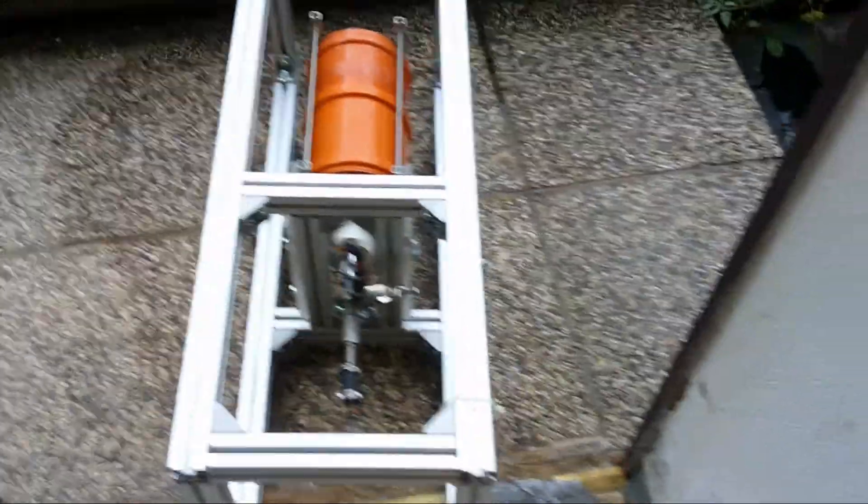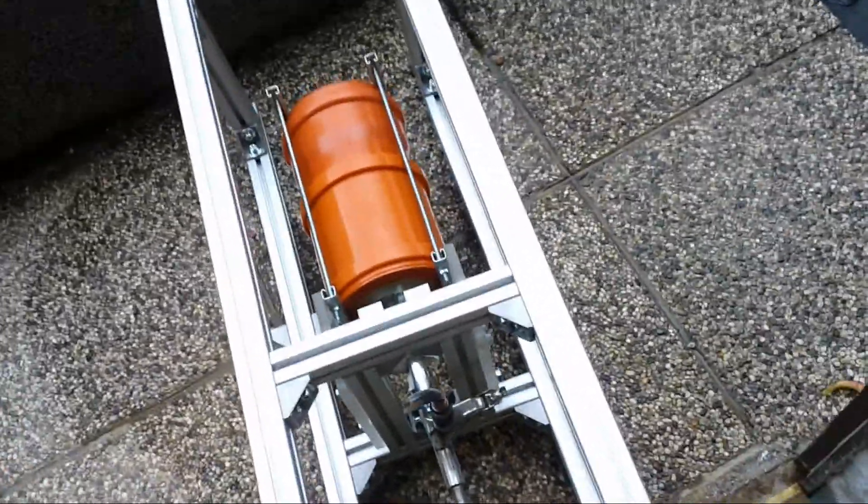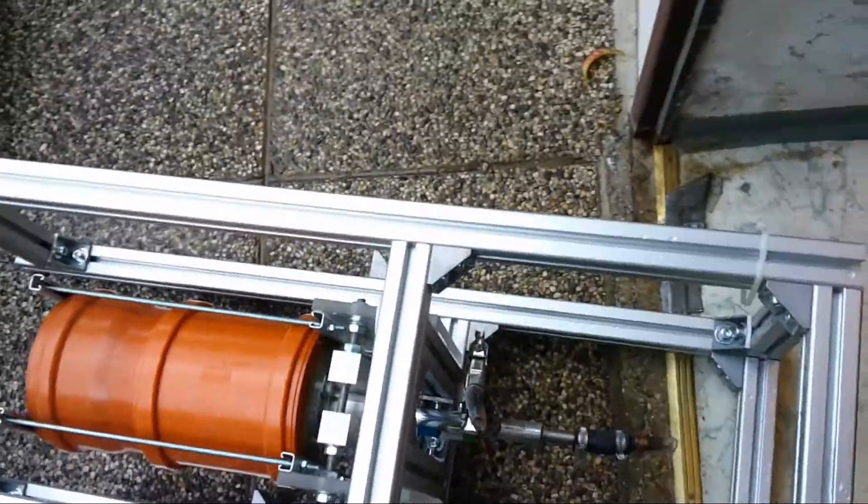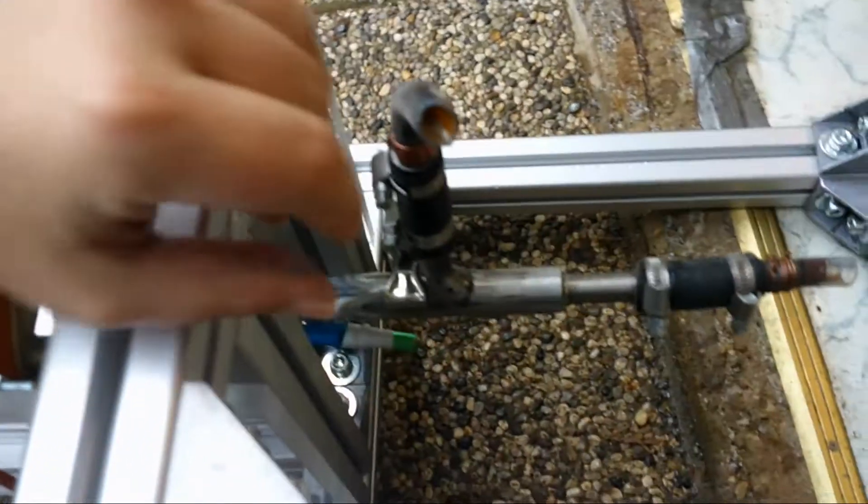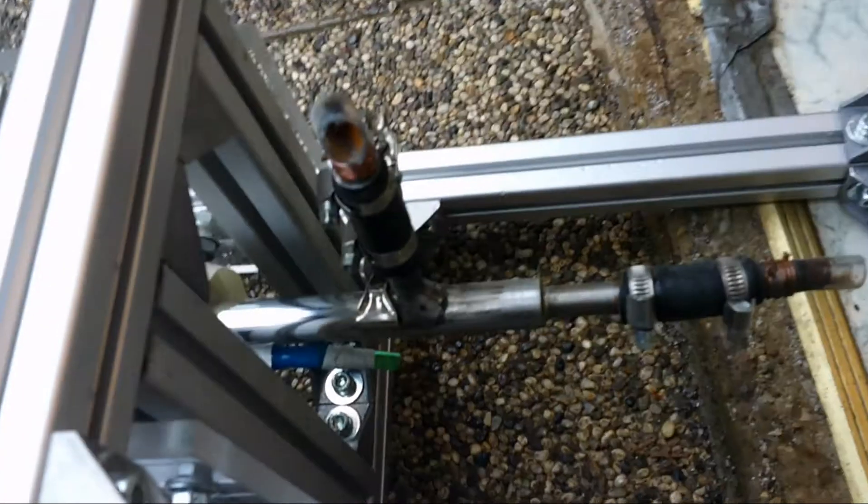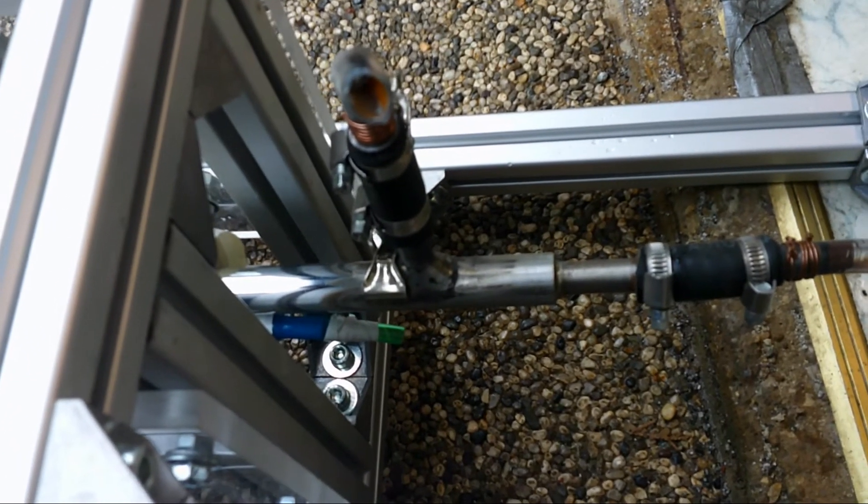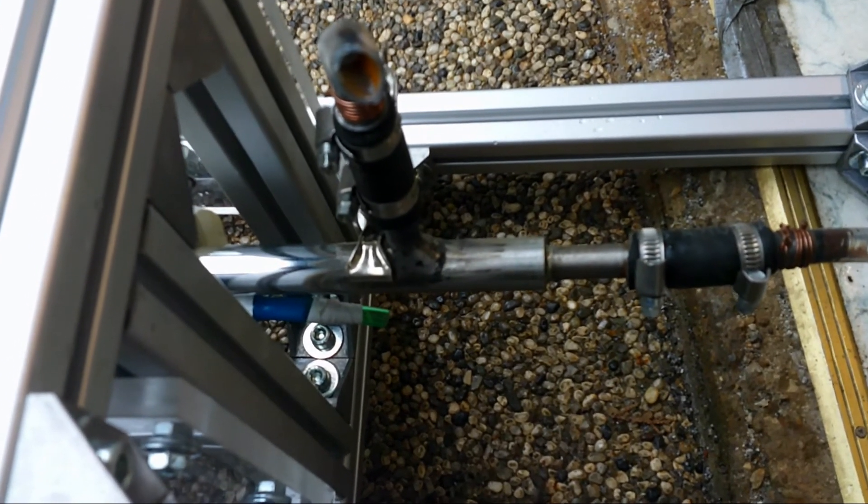However, here it is easy to see the two electrodes. This is one of the electrodes, this stainless steel tube. And this tube here is the other electrode where the high voltage potential is attached to.